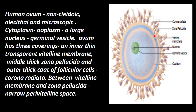The middle covering is called zona pellucida — this is thick. The outer covering is also thick. It has got follicular cells radiating out, so it is called corona radiata. Between the vitelline membrane and the zona pellucida there is a small narrow space called the perivitelline space.